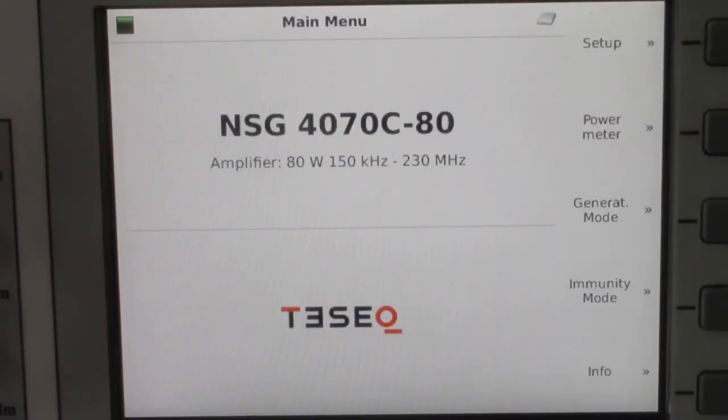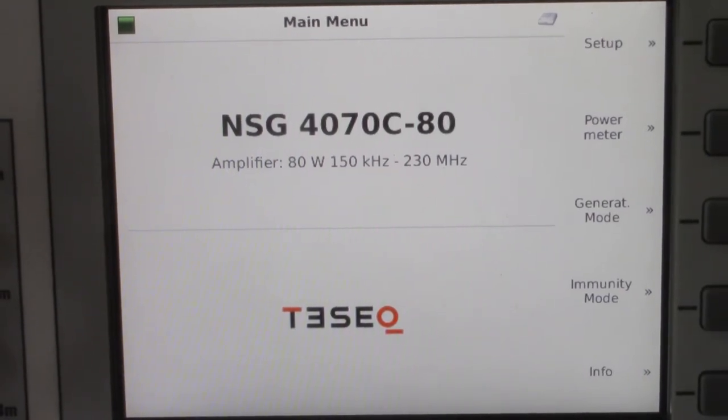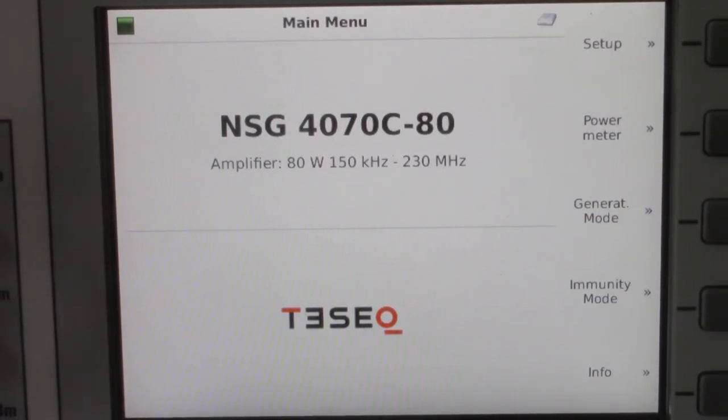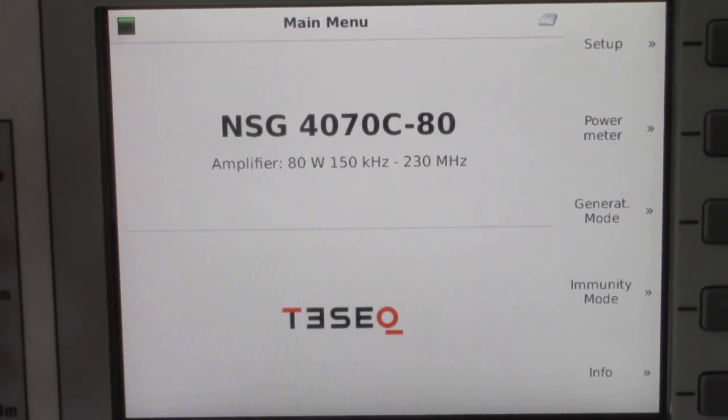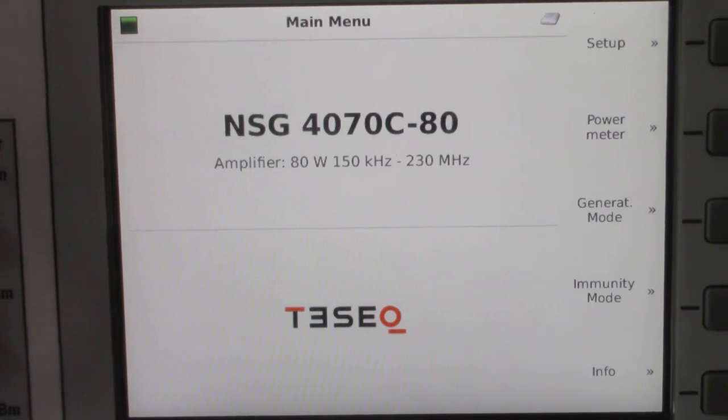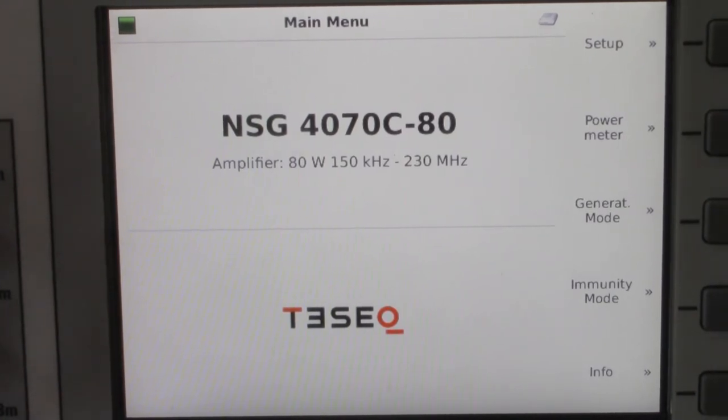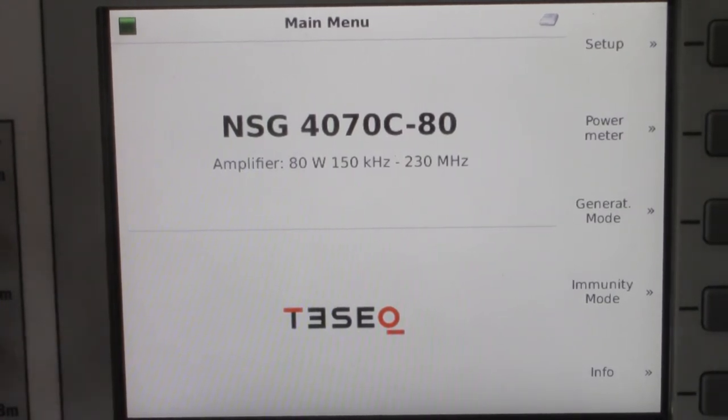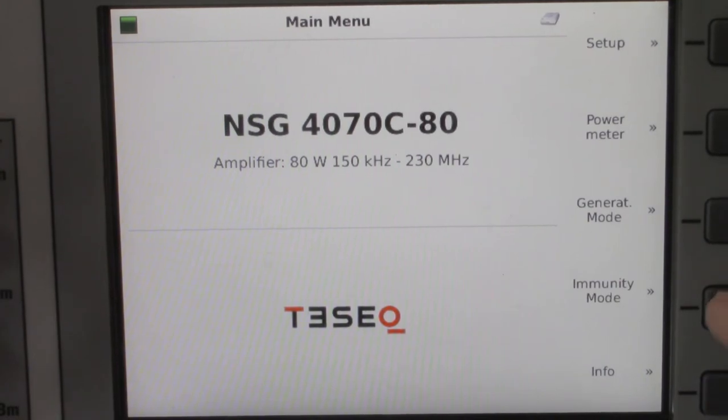As I mentioned before, we're going to walk through how to use the system interface to run that setup for IEC 61000-4-6 calibration for BCI. All we've done so far is made our connections we were talking about previously, and we're going to click on immunity mode.